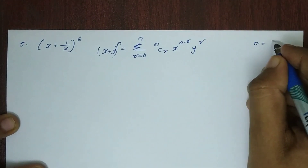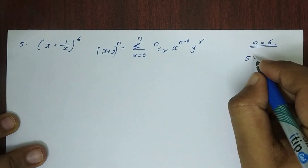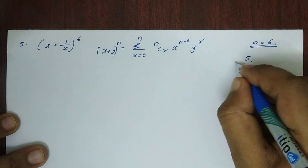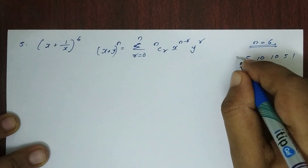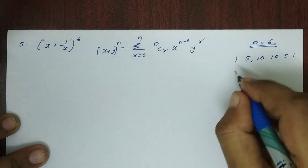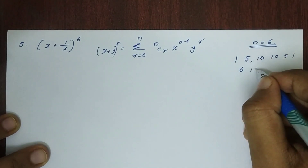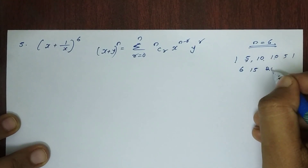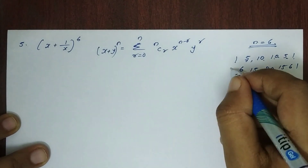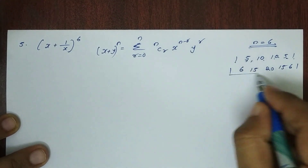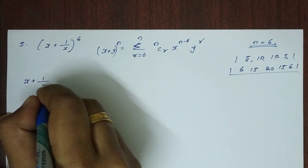Here n is equal to 6. Using Pascal's triangle: for n = 5 the row is 1, 5, 10, 10, 5, 1. For n = 6 we compute: 1, 5+1=6, 5+10=15, 10+10=20, 10+5=15, 5+1=6, 1. So the binomial coefficients for n = 6 are 1, 6, 15, 20, 15, 6, 1.